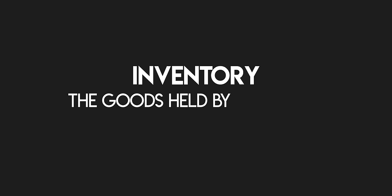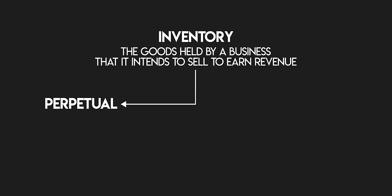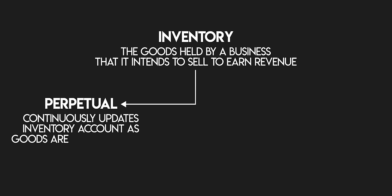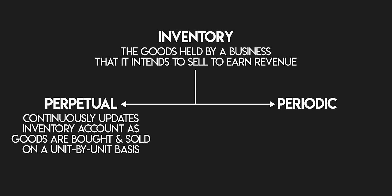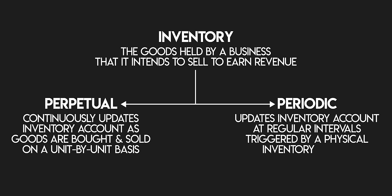First, some definitions. In a merchandising business, inventory is the goods held by a business that it intends to sell to earn revenue. A perpetual system continuously updates a business's inventory account as goods are bought and sold on a unit-by-unit basis. Whereas a periodic system updates a business's inventory account at regular intervals. This is usually triggered by a physical inventory count that happens at the end of each accounting period — it could happen after each month, quarter, or at the end of a financial year.